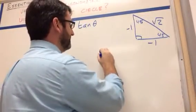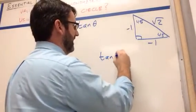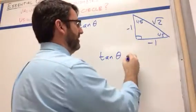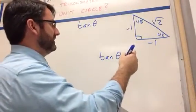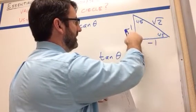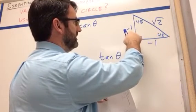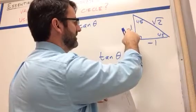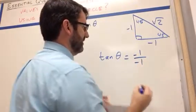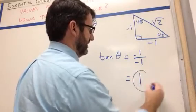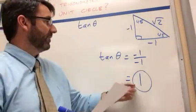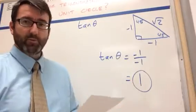To find the tangent of 945 degrees, that's equal to the opposite side over the adjacent side: negative 1 over negative 1, which is just 1. So the tangent of 945 degrees is 1.